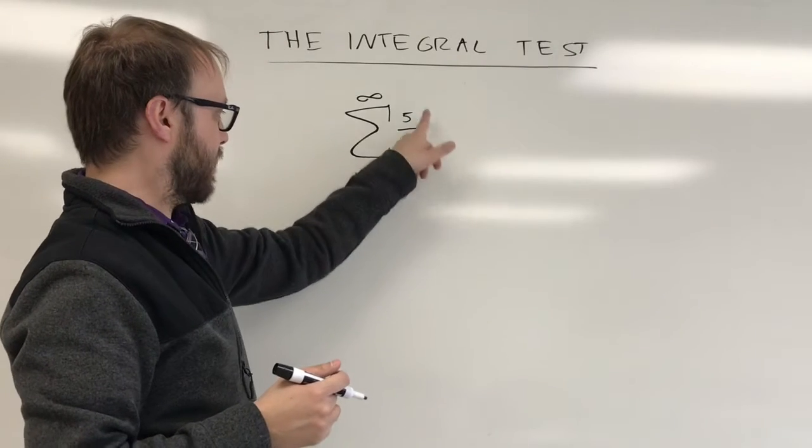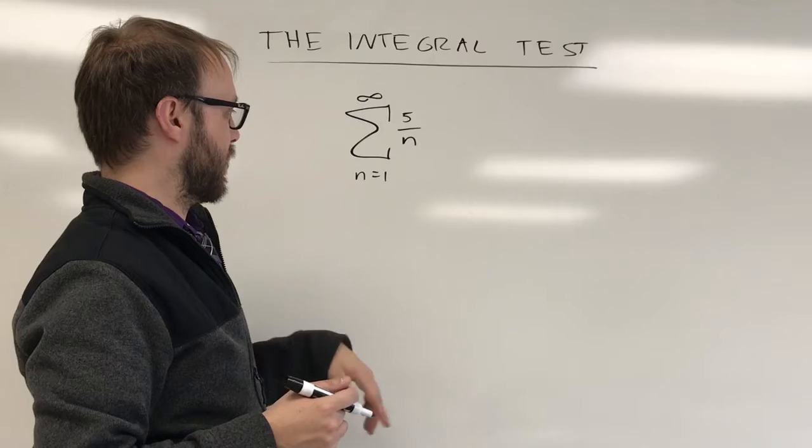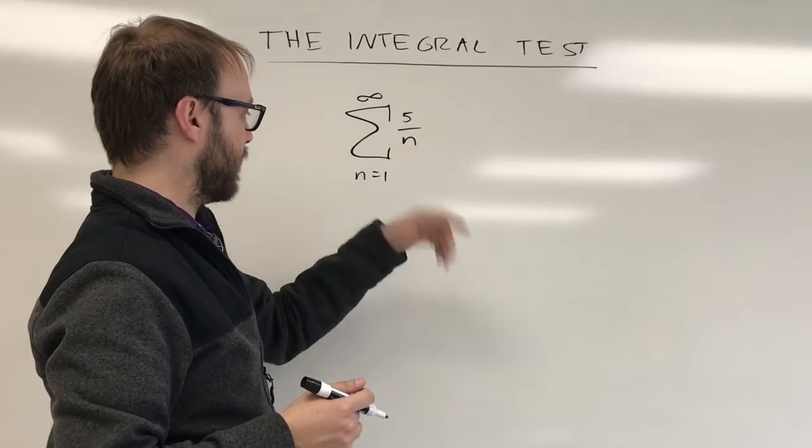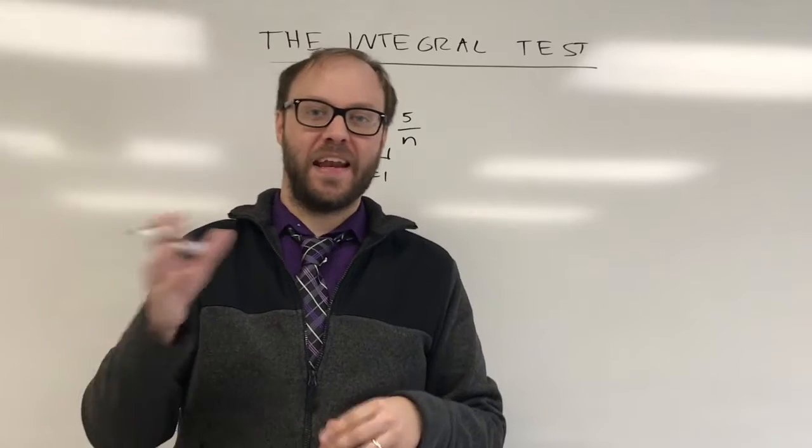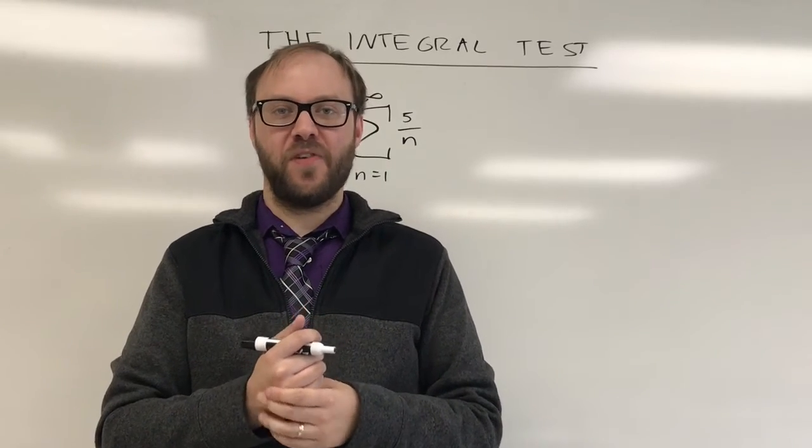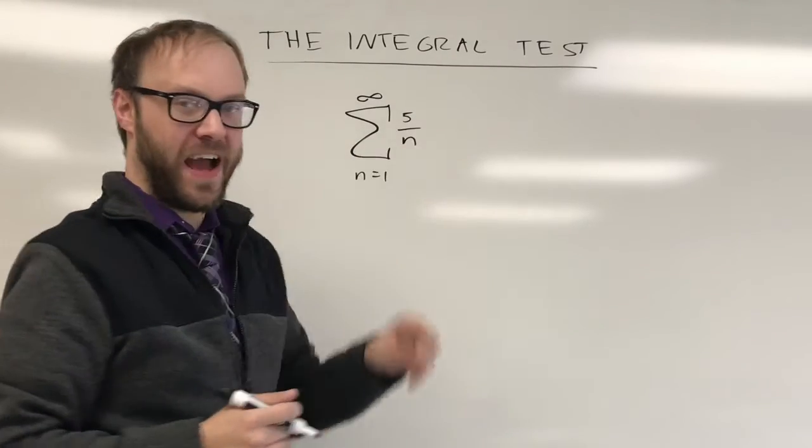So here's a series 5 over n. And you can start listing out terms. So you'd have 5 over 1, which is 5, 5 over 2, 5 over 3, 5 over 4, and so on. You'd be adding those up. First of all, hopefully you notice this looks kind of familiar, except you've got a 5 here.